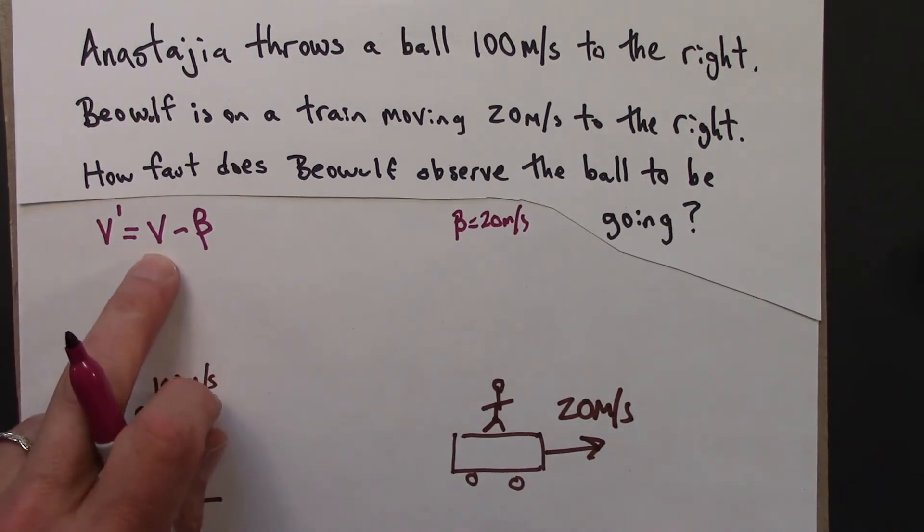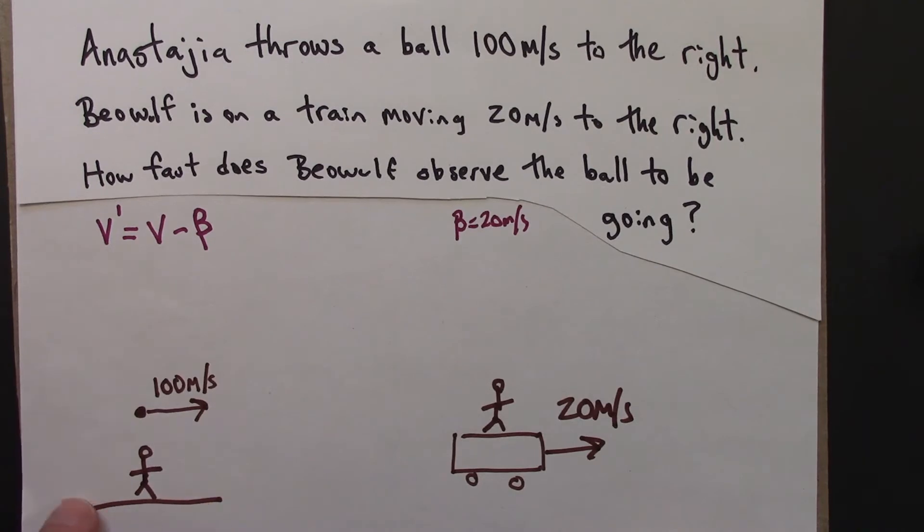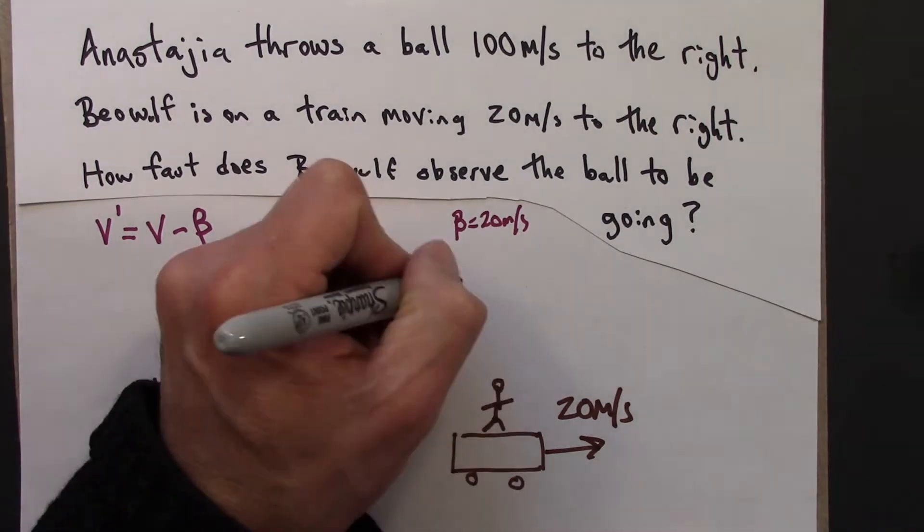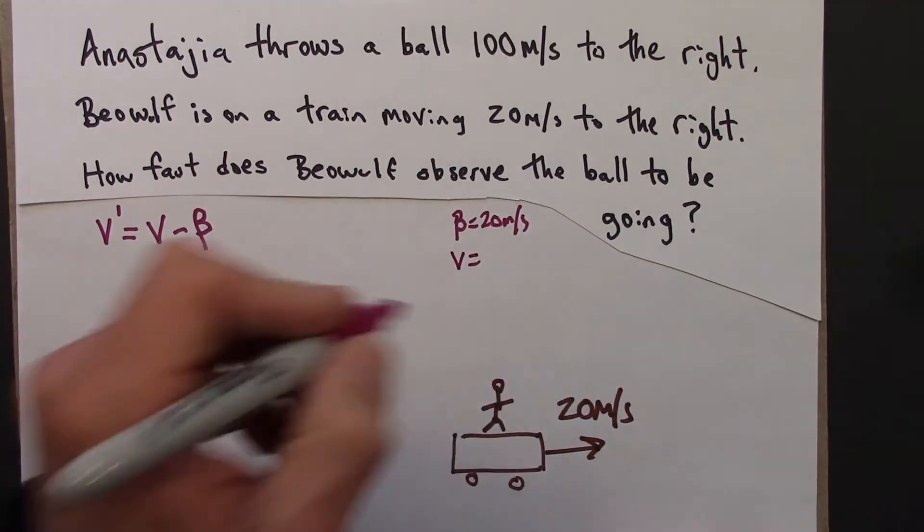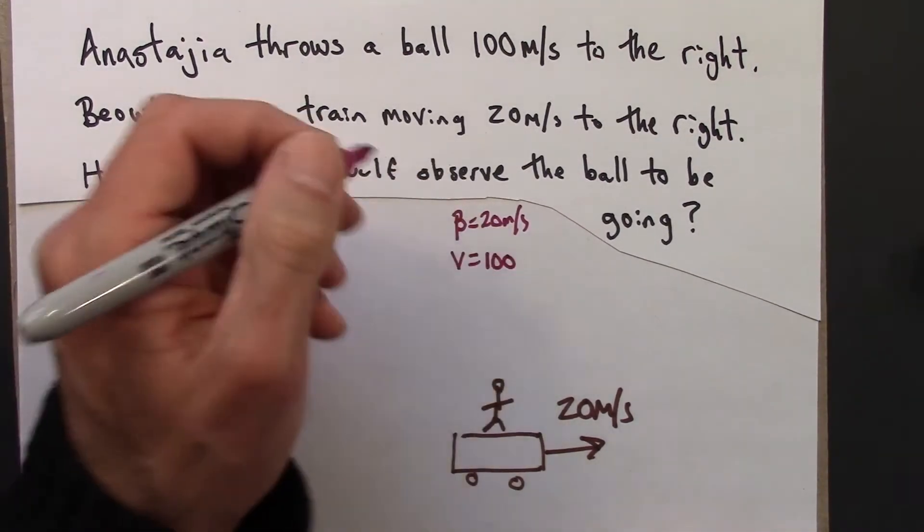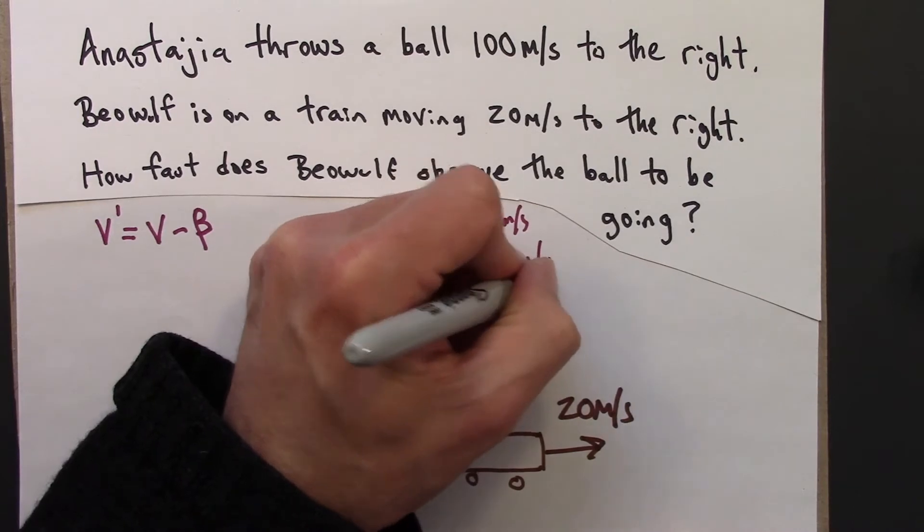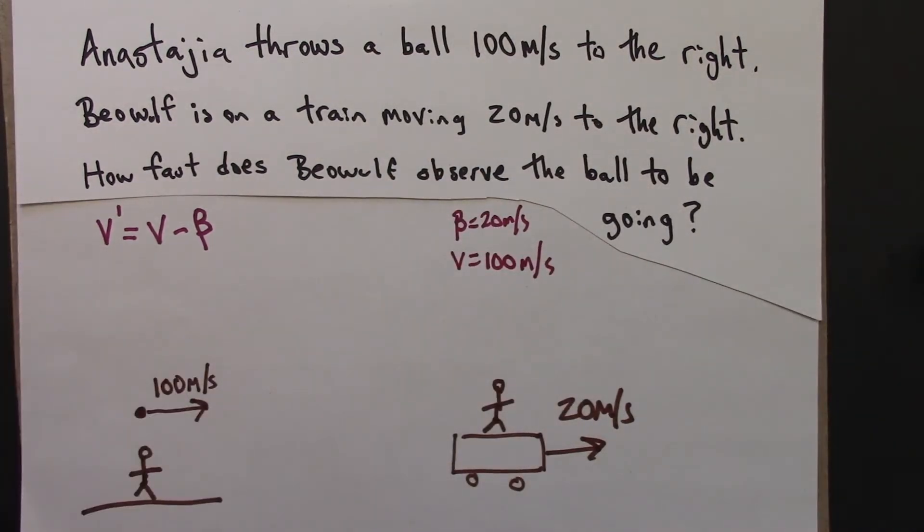V is the speed as measured by an observer at rest in the frame that we're taking to be not moving. So V is going to be 100 meters per second. And then we can plug into the transformation equation and see what we get.